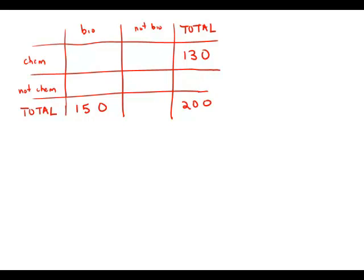So first of all, going across the bottom row, 150 in biology means there must be 50 who are not majoring in biology at all. Going down the column all the way on the right, 130 in chemistry means there must be 70 not in chemistry in order for the total to add up to 200.